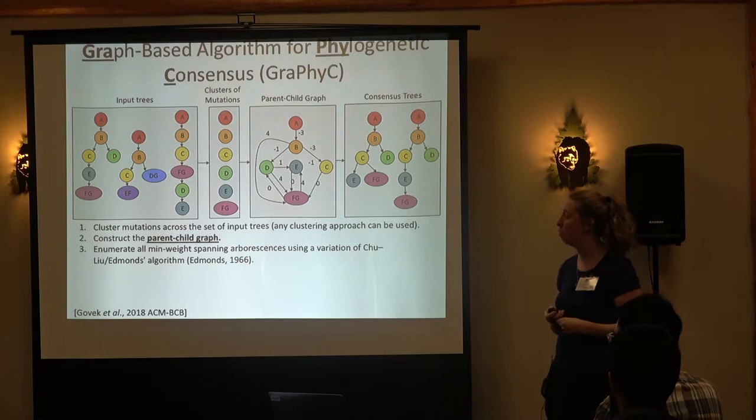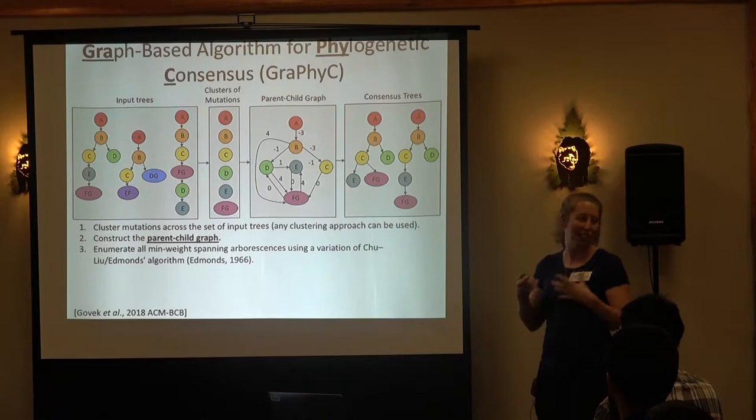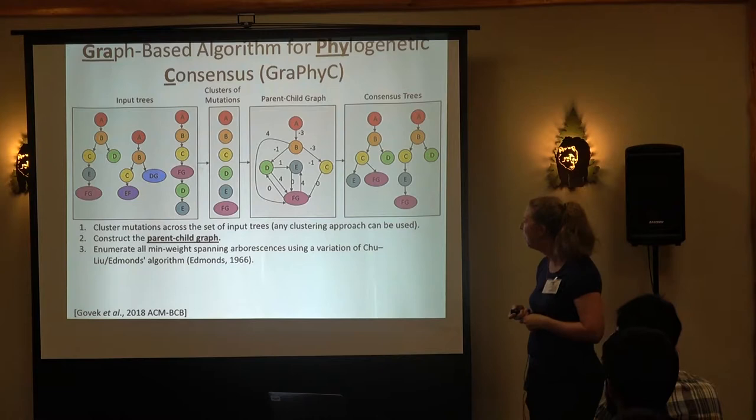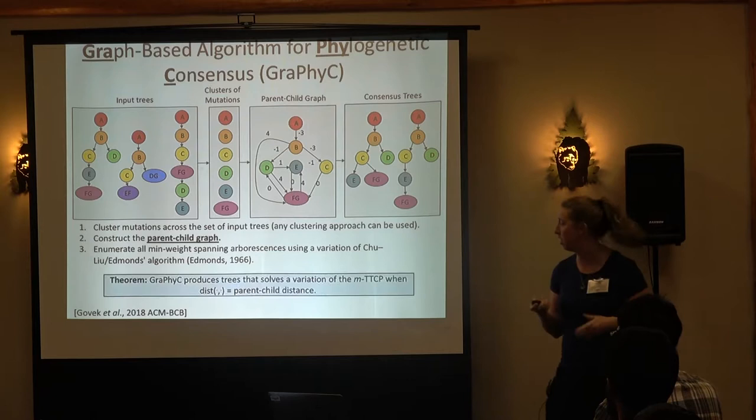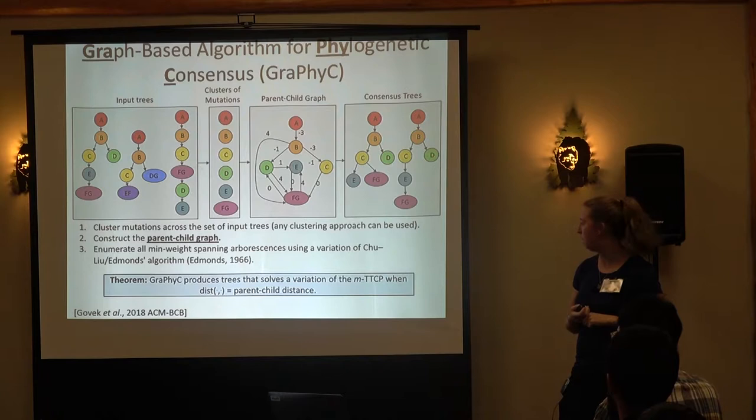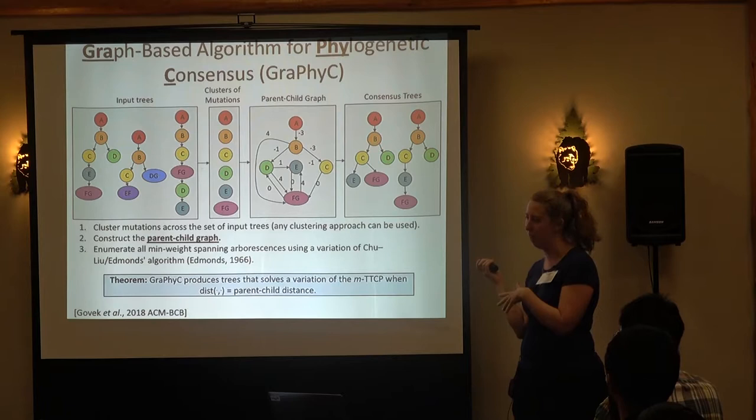We combine this all together as what we call our graph-based approach, which we call GRAPHIC — you always have to have a fun name, and this is what my students came up with. One nice thing about this approach is it has provable properties: we can show it actually solves a particular variation of the MTTCP when our distance is parent-child distance.